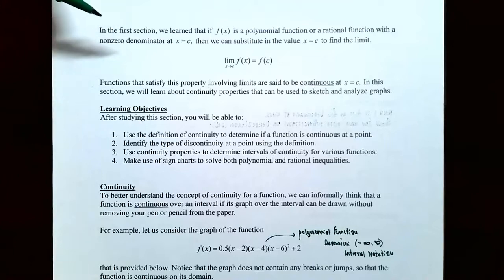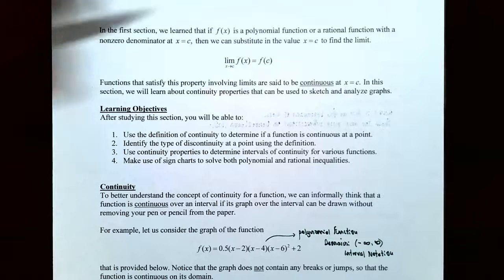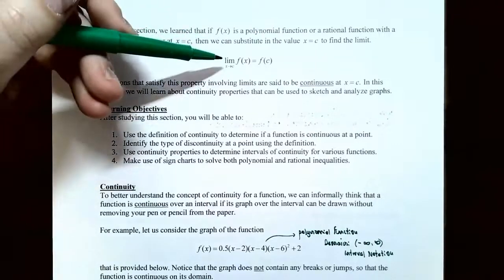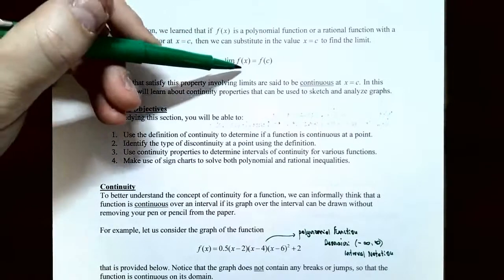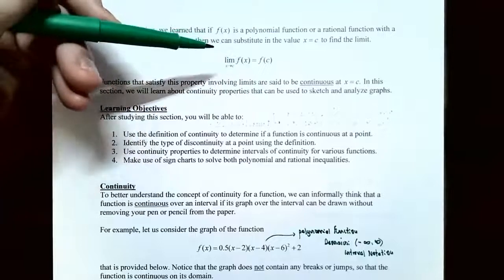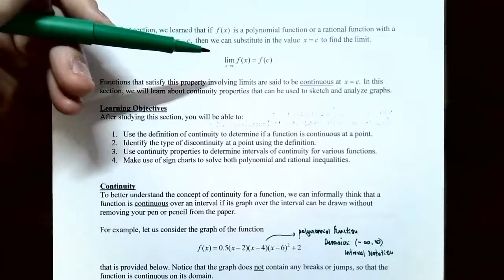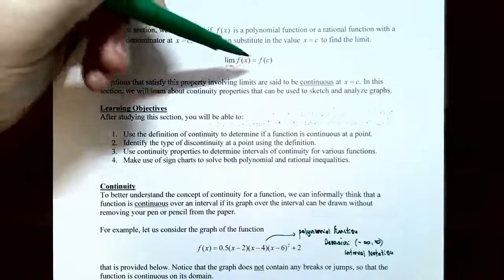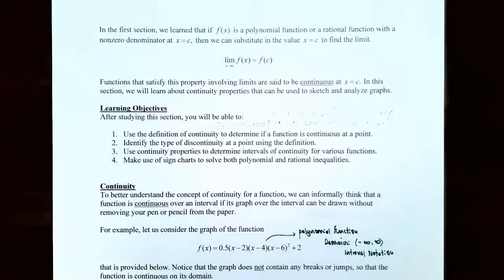If you remember from the first section, there was a shortcut for finding the limit of a polynomial function. If you knew that you have a polynomial function f of x, or even a rational function where there was a nonzero denominator at x equals c, and you were trying to find the limit as x approaches c, you could simply plug in x equals c and evaluate the function at c, and that found the value of the limit.